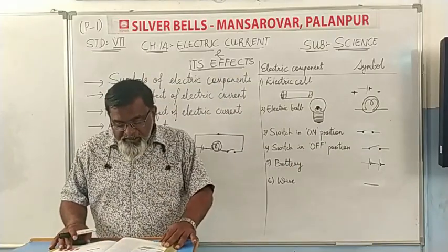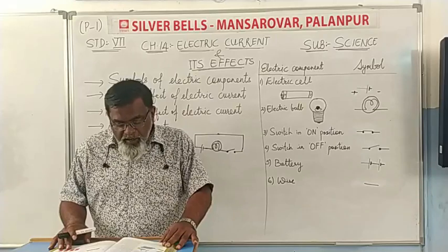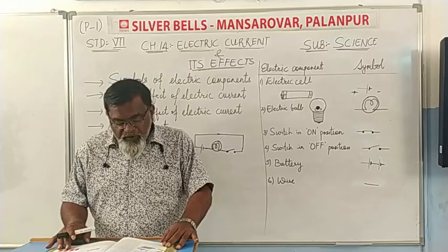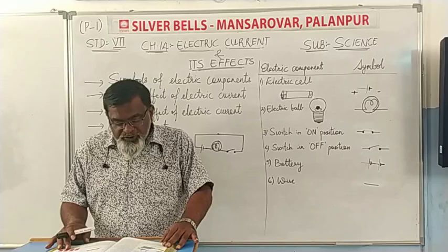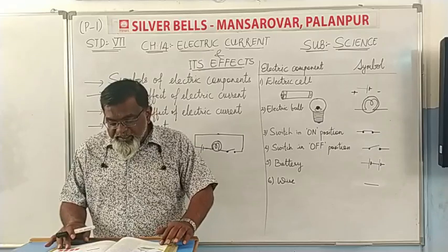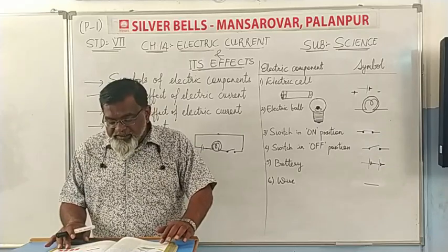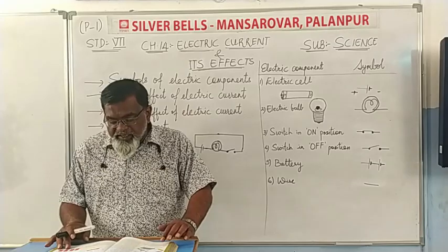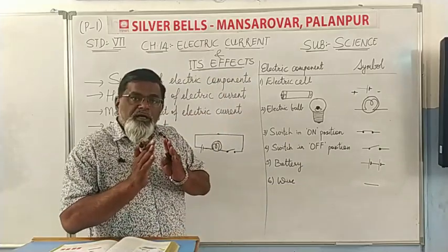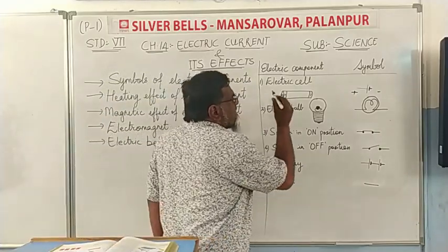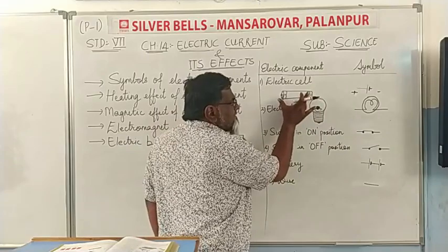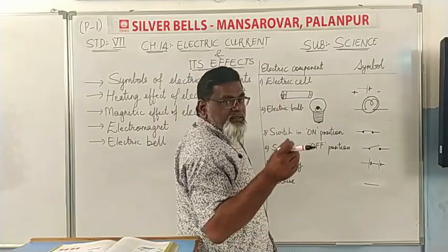Do you know what a battery is? Look at the symbol of a battery. For some activities, we may need more than one cell, so we connect two or more cells together. Notice that the positive terminal of one cell is connected to the negative terminal of the next cell. Such a combination of two or more cells is called a battery.